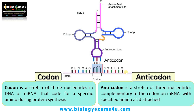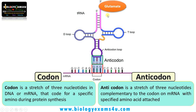Whereas an anticodon is a stretch of three nucleotides complementary to the codon on mRNA, with a specific amino acid attached. So this GAG is bound by a tRNA which has an anticodon complementary to GAG. This tRNA's anticodon is CUC, which is called the anticodon — it means opposite to the codon. This tRNA with this anticodon bears an amino acid; here it is glutamate. GAG codes for glutamate.